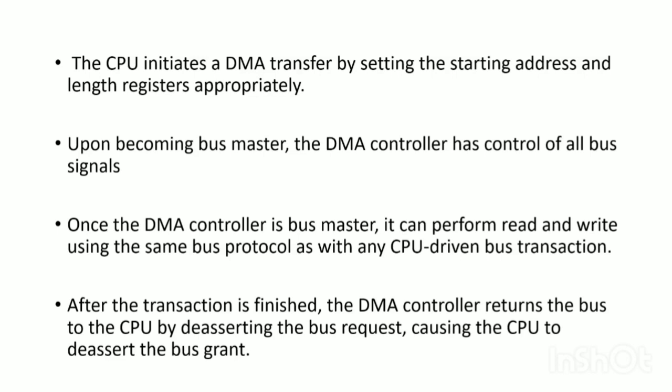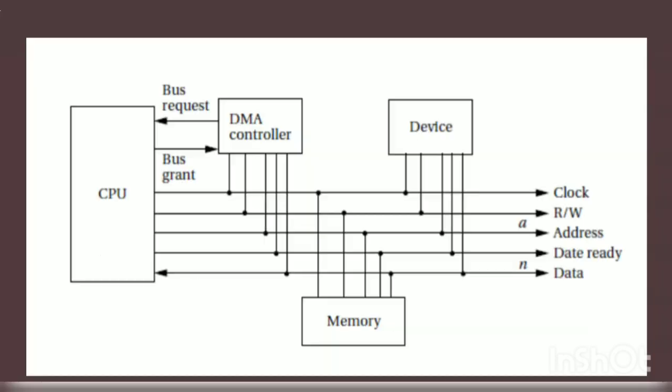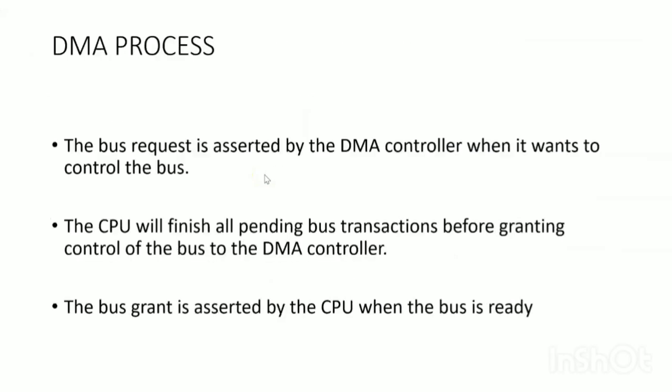Once the DMA controller becomes the bus master, it has control of all the signals — read, write, and everything — happening under the DMA controller's supervision. After the transaction is finished, the DMA controller returns the bus to the CPU by de-asserting the Bus Request, causing the CPU to de-assert the Bus Grant and take back control of the bus.